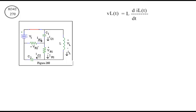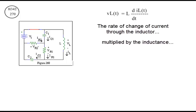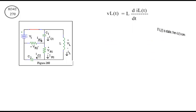This is the current voltage relationship for the inductor. The rate of change of current through the inductor multiplied by the inductance is the voltage across the inductor. If the current through the inductor is stable, then the voltage across the inductor is zero.